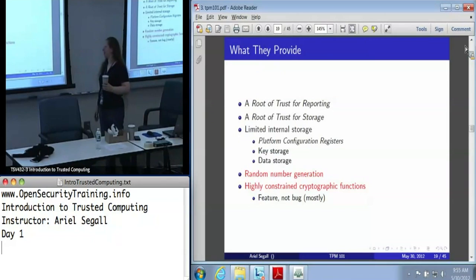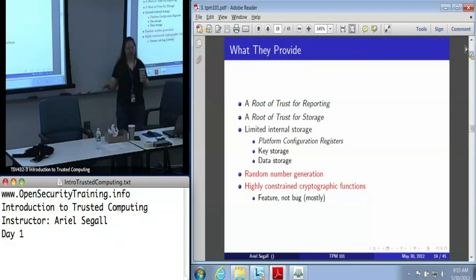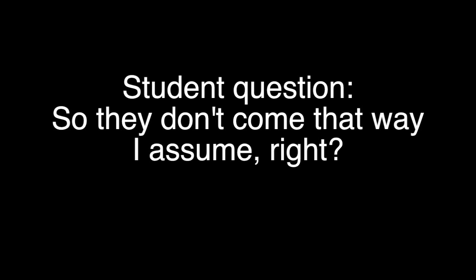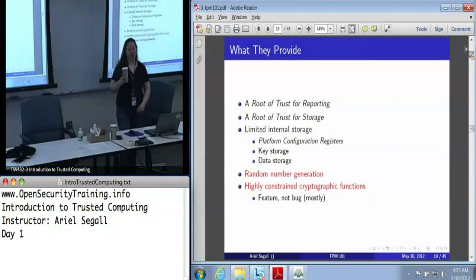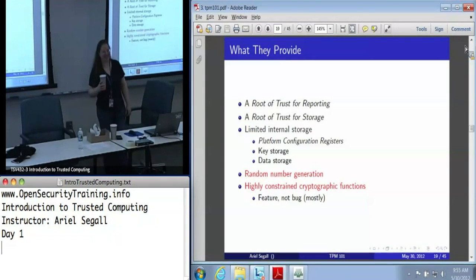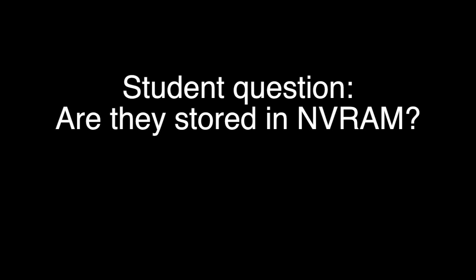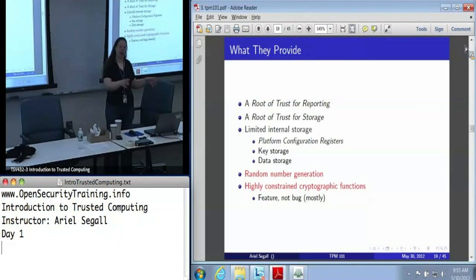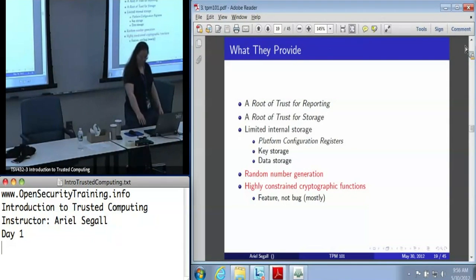Jumping back to our high-level topic: we've talked about all of the TPM's internal storage. The 1024 bits of NVRAM is its own region. The region that the root keys are stored in is also non-volatile, but it's not considered part of the NVRAM for NVRAM operations — there's nothing you can do to set that to read, for example. It's completely segregated.